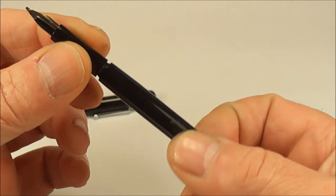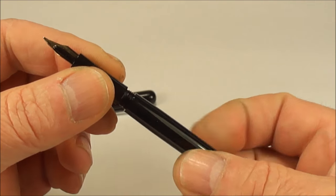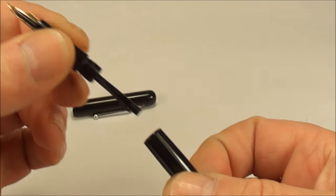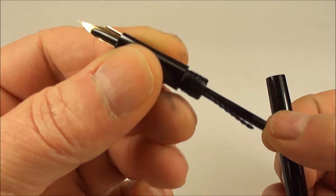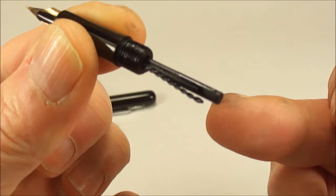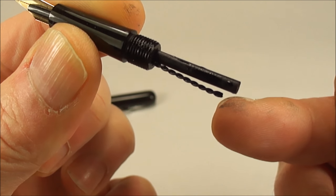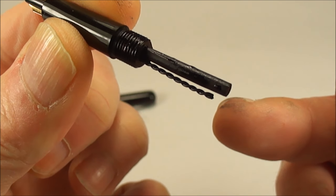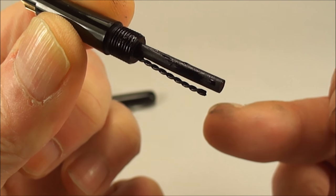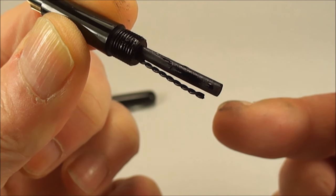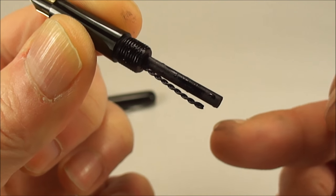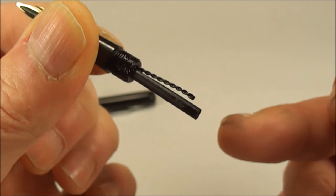Now how do you fill these pens? Nice and simply, what you would do, you would actually unscrew the barrel like so. There's the feed. You'll notice to these pens as well, you'll notice this little silver sort of twisted wire just underneath the feed going into the section.